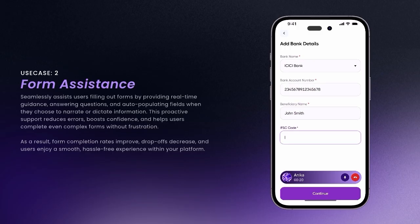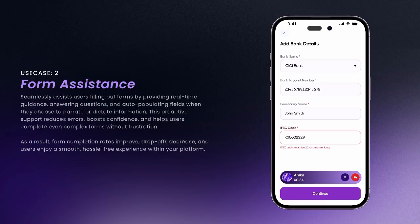Now could you share the IFSC code? ICI0002329. Thanks for sharing that, but it seems like the IFSC code might be incomplete. In India, an IFSC code is always 11 characters long and should start with four alphabets representing the bank, followed by seven numbers. The code you shared has only three letters at the beginning instead of four. Could you please check and tell me the correct IFSC code? Oh, you're right, I missed an alphabet. The correct code is ICIC0002329. Perfect, I've updated the code. Could you please check all the details once and let me know if you spot any issues? If everything looks good, you can move on to the next step by clicking on the continue button. Yes, everything is fine. We can move ahead. Thanks for your help.